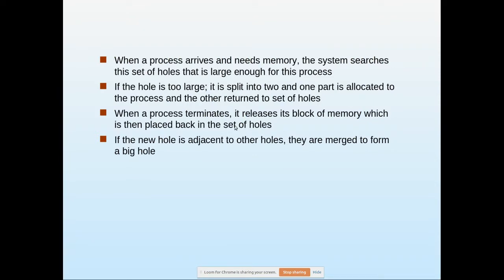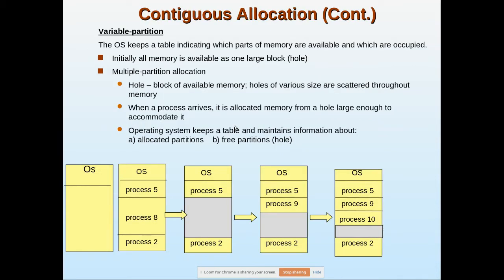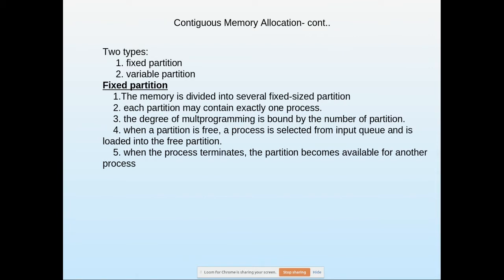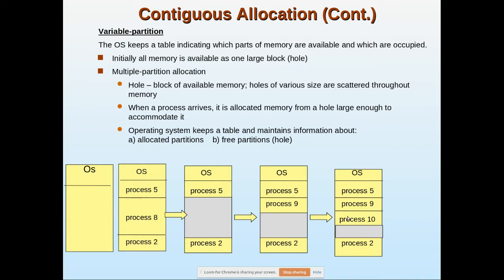In this video we are going to review fixed partition and variable partition. In fixed partition, the memory size is divided into equal sizes. When a process arrives it occupies that particular partition. When the process completes, it is removed from memory and the space is declared as free. The operating system keeps a table consisting of partition numbers and whether they are free or not.